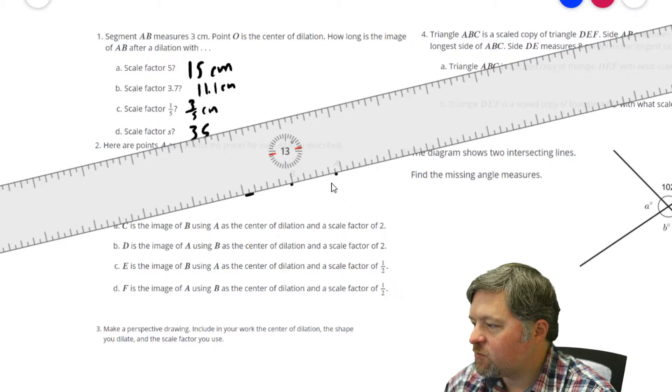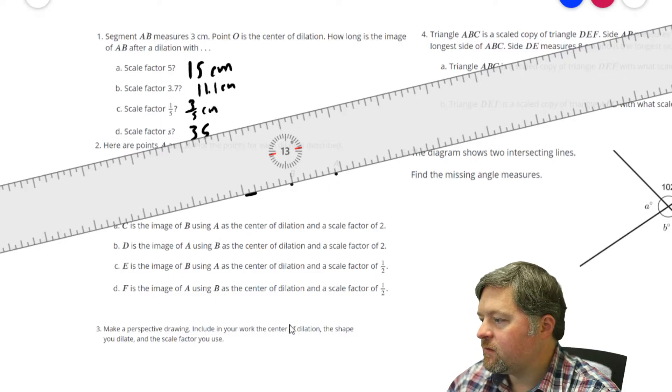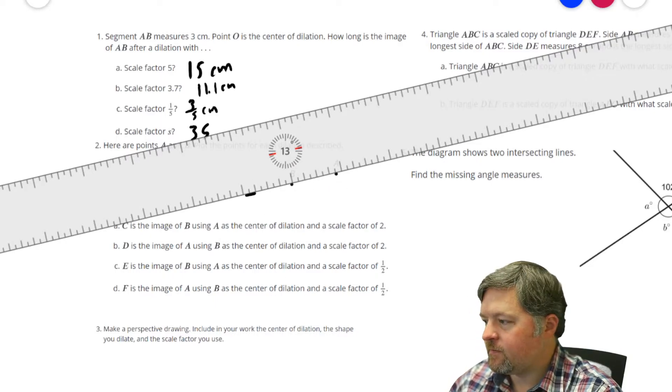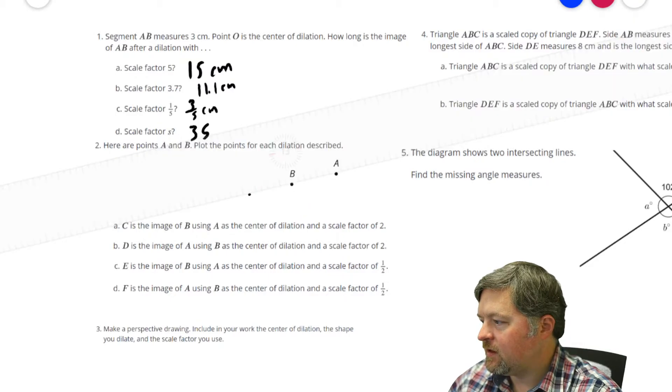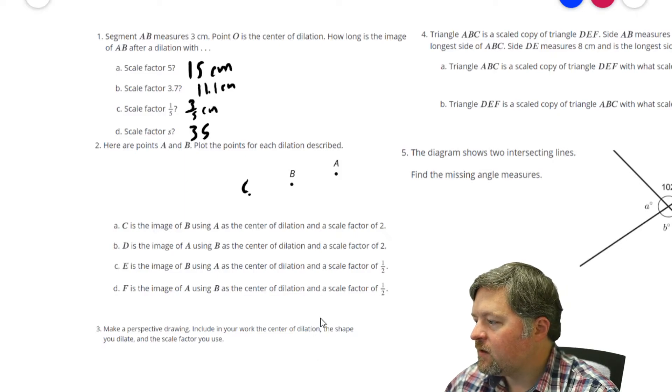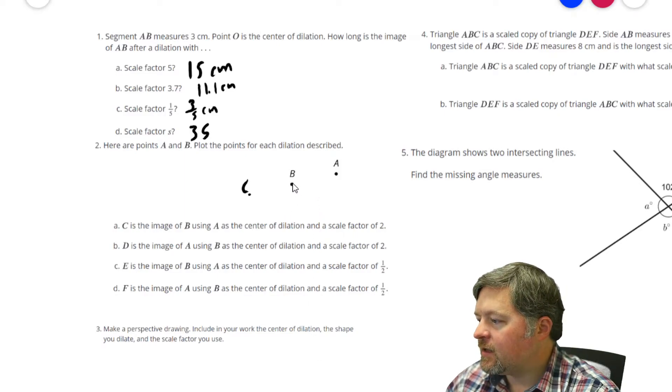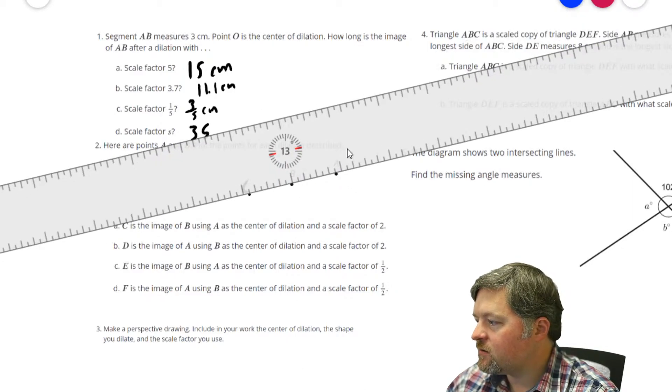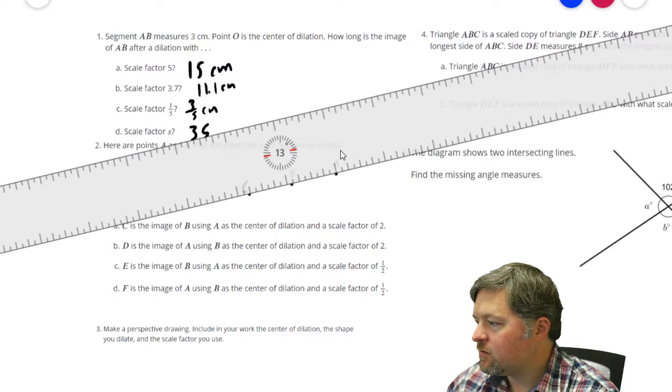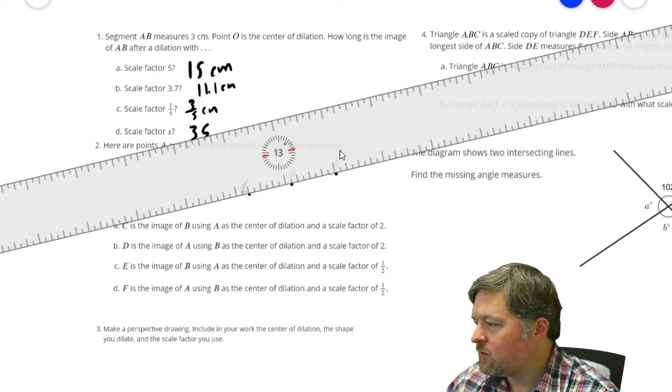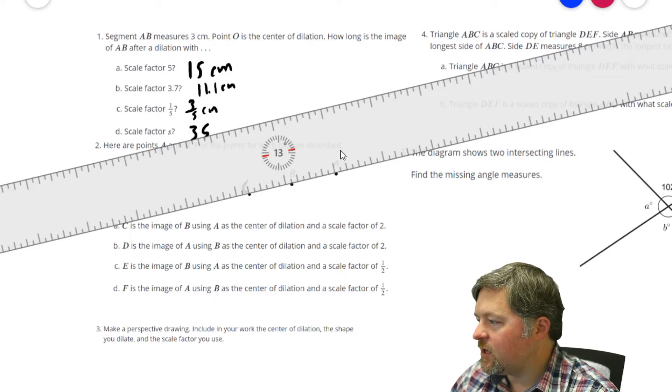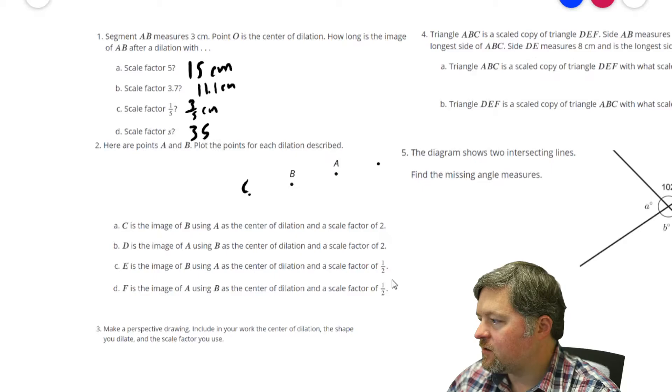So that is point... You have to turn the ruler off to label it. C. D is the image of A using B as the center of dilation. Which means now I need to go here. And close the ruler. And that's D.